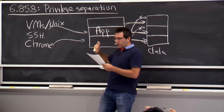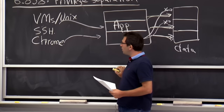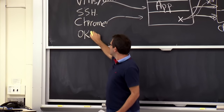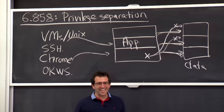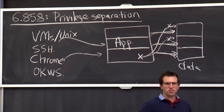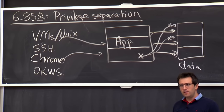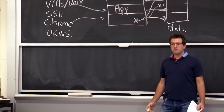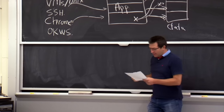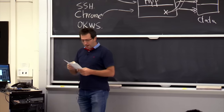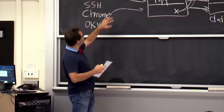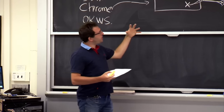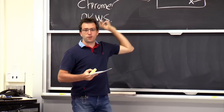That's a very quick summary of what privilege separation is about and why OKWS is an interesting case study — more illustrative than an important piece of software in its own right. OKWS is going to use Unix permissions and Unix mechanisms to achieve the separation between its different components, so it's important for us to understand how Unix protection mechanisms work.